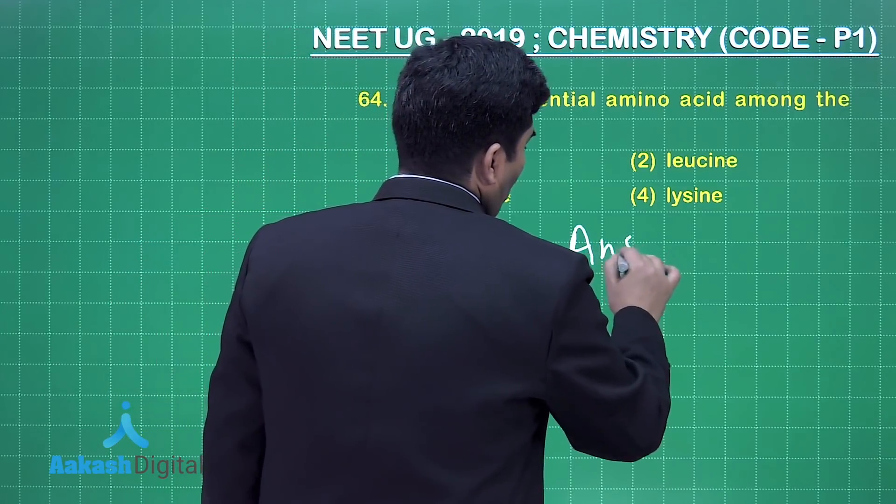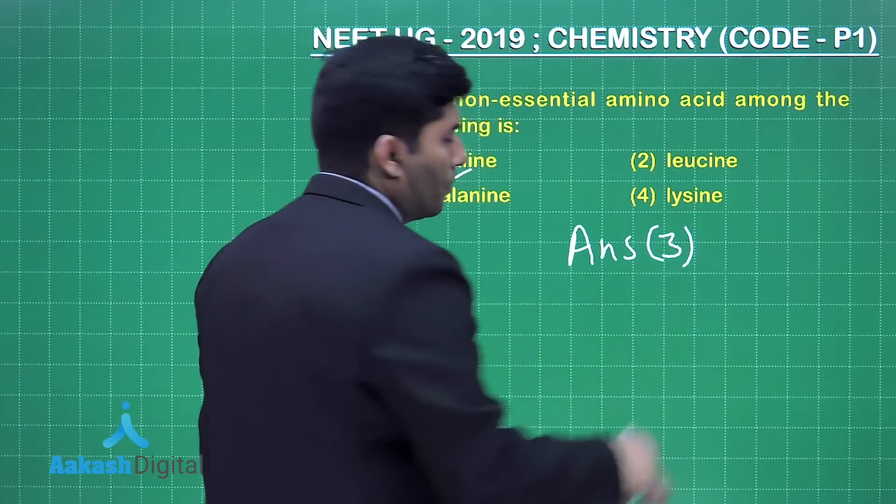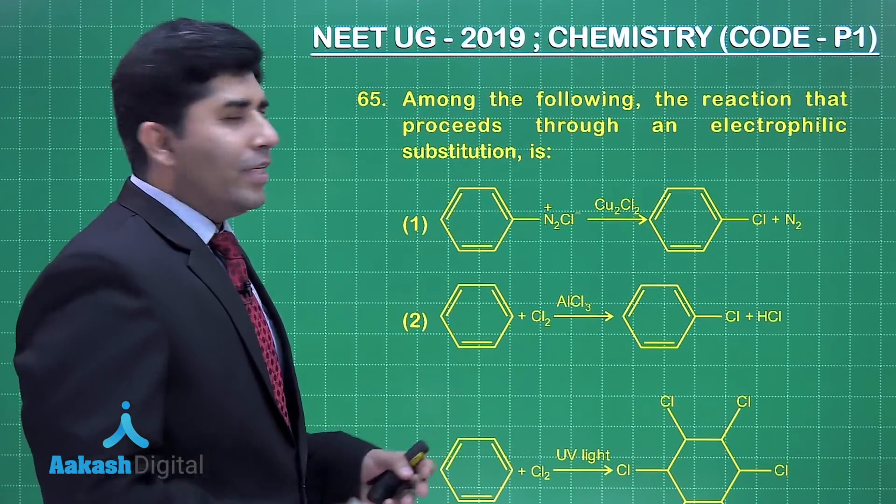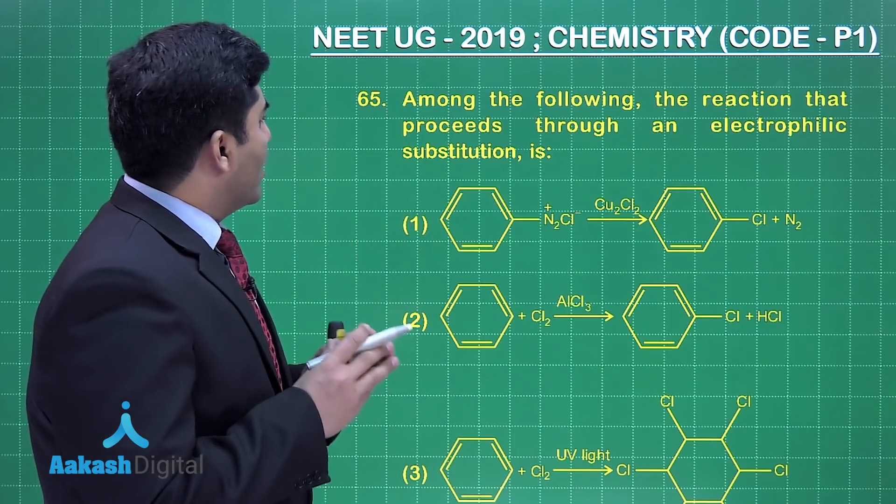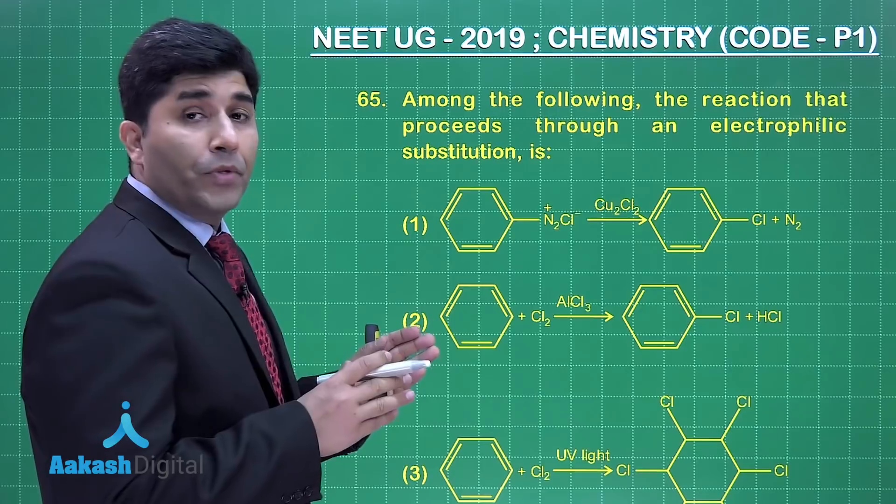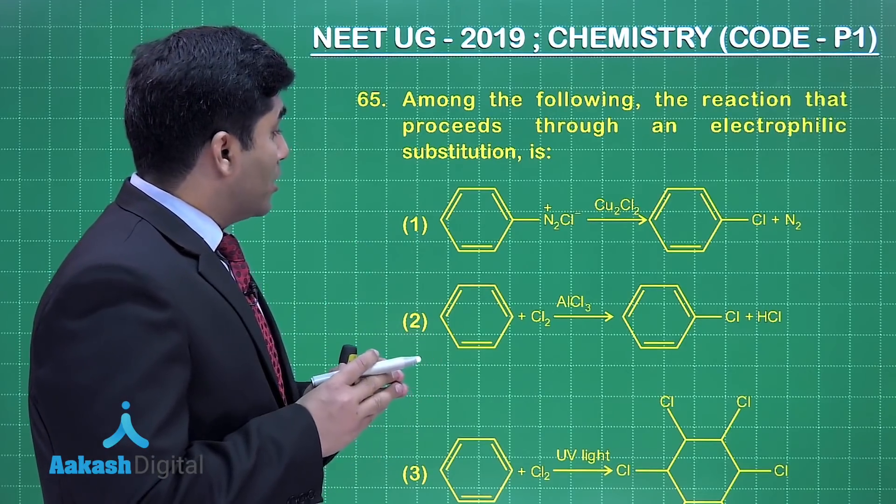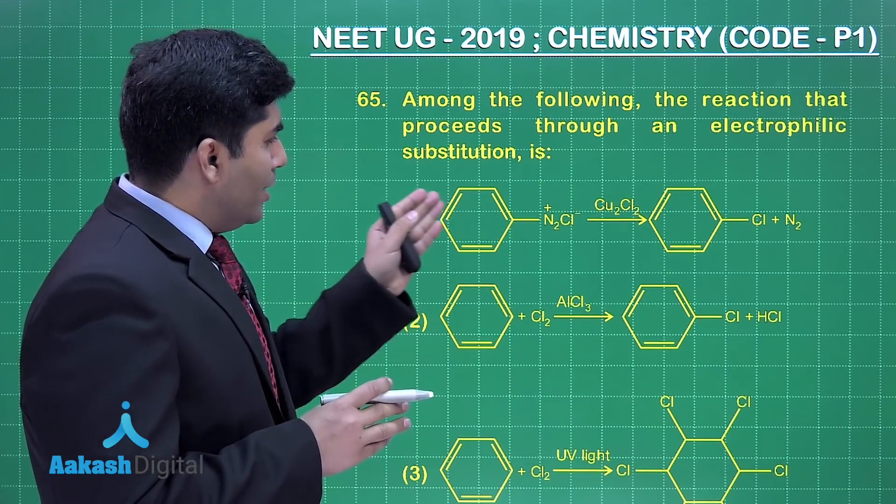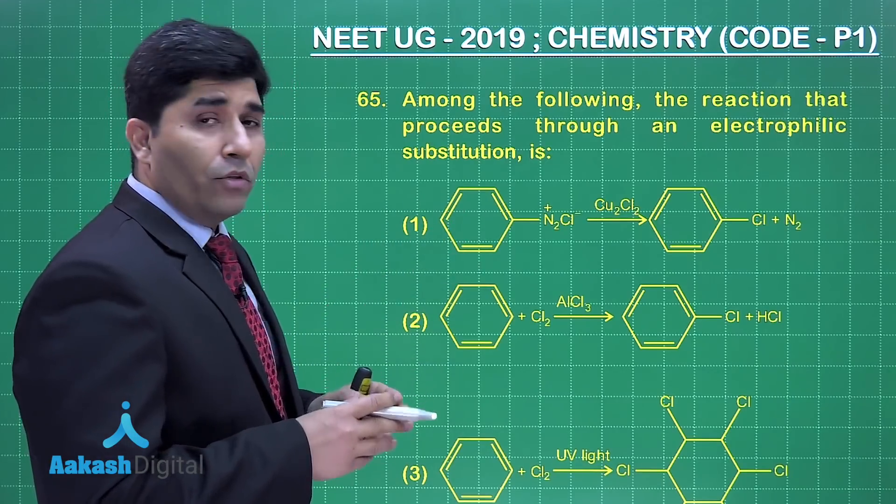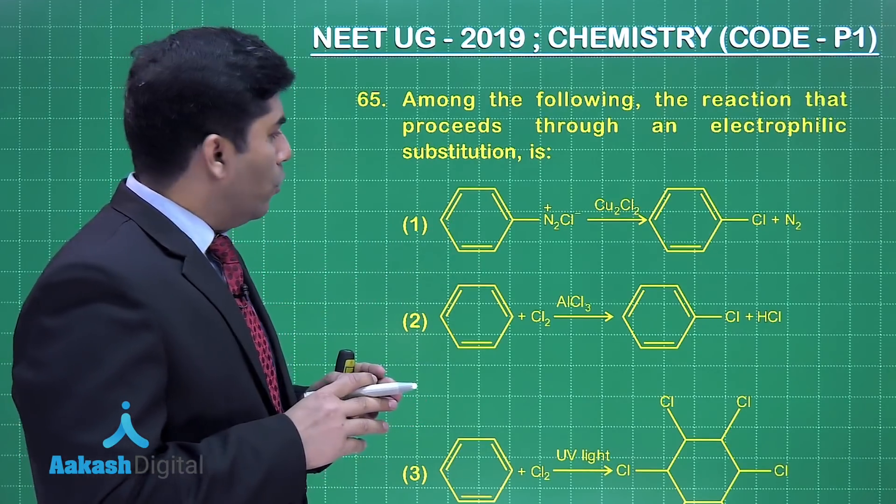Let's move on to the next question. In this question asking among the following reactions that proceed through the electrophilic substitution reaction. First option: benzene diazonium chloride is given to you and CuCl, Cl2 is reacting with it to give chlorobenzene. Now this is Sandmeyer reaction and we know that it follows the nucleophilic substitution reaction.